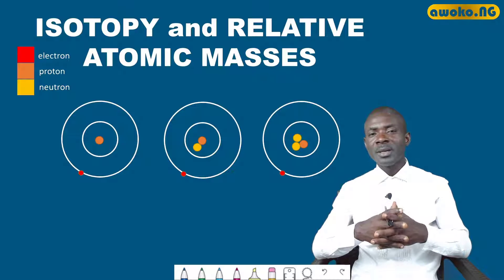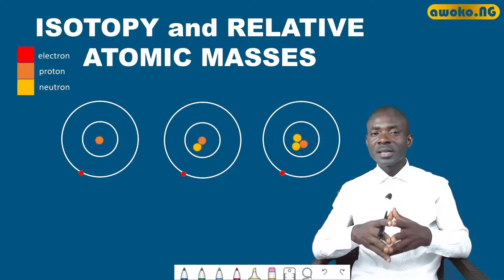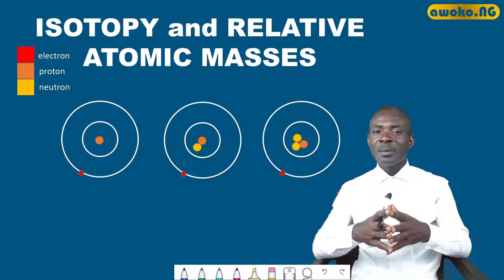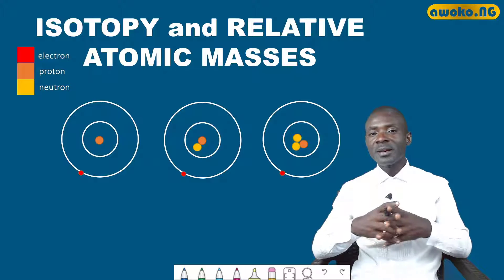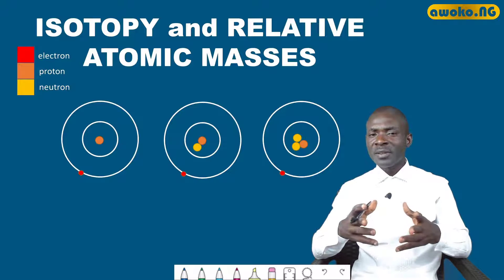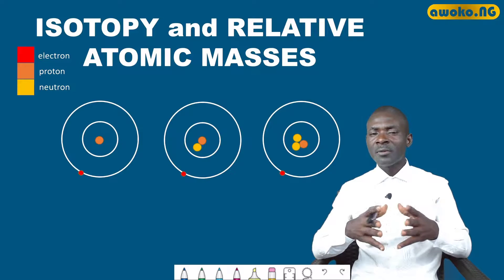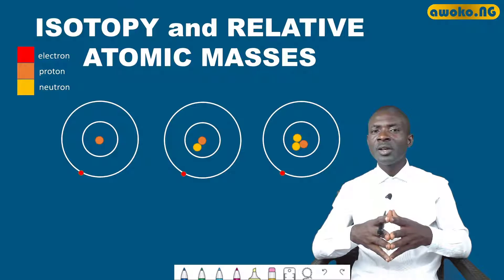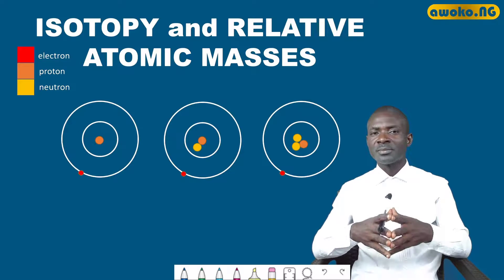Isotopy simply means a phenomenon whereby an element has the same atomic number but different mass number. The difference in mass number is due to the difference in the number of neutrons in the atom.